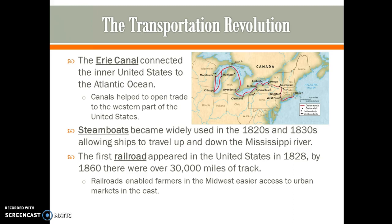During Jackson's presidency there was also a transportation revolution. The Erie Canal connected the inner United States to the Atlantic Ocean, and canals became a very popular way to open waterways into the interior of the country, helping to open trade in the western United States. Steamboats also became widely used in the 1820s and 1830s because they allowed ships to travel up and down the Mississippi River — previously, wooden ships were dismantled at the bottom of the river and carried back upstream or sold for lumber. The first railroad appeared in the United States in 1828, and by 1860 there were over 30,000 miles of track, including the transcontinental railroad connecting the East and West Coasts. Railroads enabled farmers in the Midwest easier access to urban markets in the East.